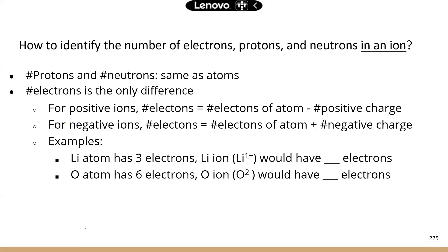Now let's look at some specific rules. How do you identify the number of particles in an ion? Protons and neutrons do not change whether we're talking about atoms or ions — those numbers are fixed. Between atoms and ions, you only gain or lose electrons, so the number of electrons is the only number that changes. There is no change to protons or neutrons.